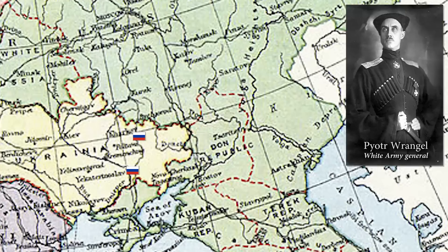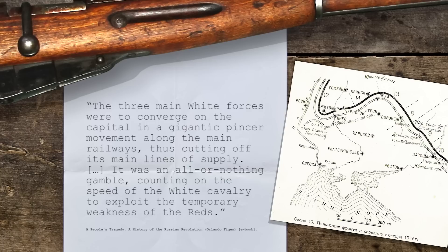Thousands of Cossacks now joined Denikin. On the 13th of June, Kharkiv was taken and Ekaterinoslav on the 22nd. Led by Pyotr Wrangel and with the support of British tanks, Tsaritsyn was also taken on the 19th of June. The Reds were plagued by poor morale and many deserted. On the 3rd of July, Denikin issued his Moscow Directive, meant to deliver the Reds the definitive blow. The three main white forces were to converge on the capital in a gigantic pincer movement along the main railways, cutting off its main lines of supply — an all-or-nothing gamble counting on the speed of the white cavalry. It started well: Poltava was taken, and soon the entire Ukraine was cleared of Bolsheviks. Denikin's forces captured Orel and were only 400 kilometers from Moscow and 150 kilometers from Tula, a crucial weapons arsenal city.